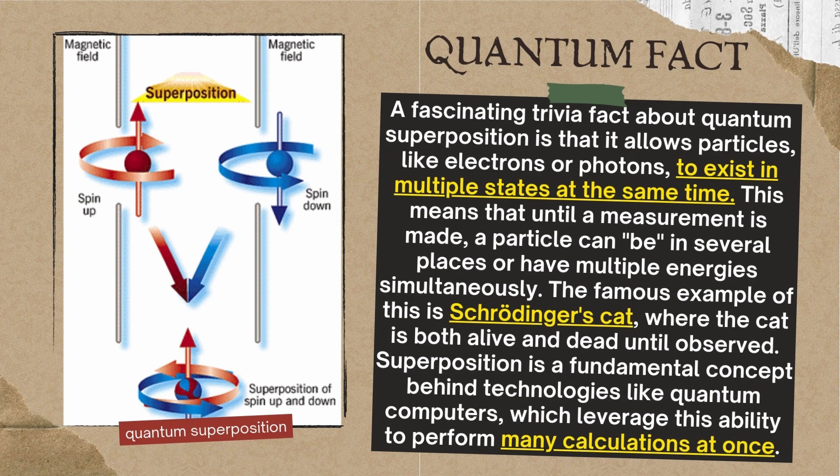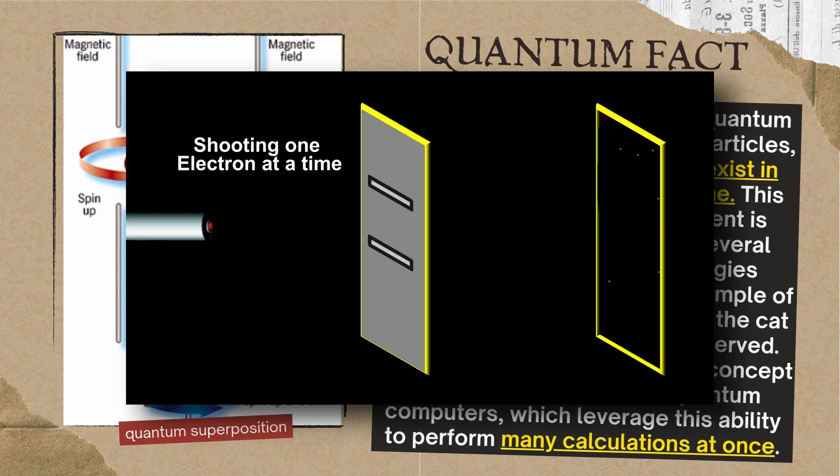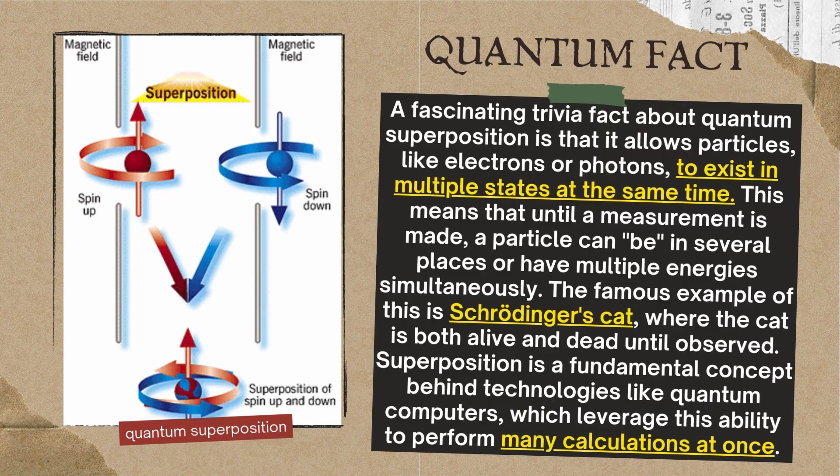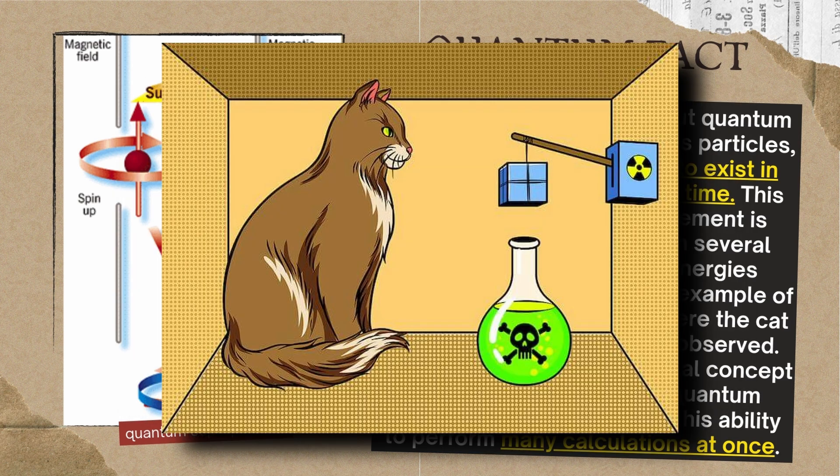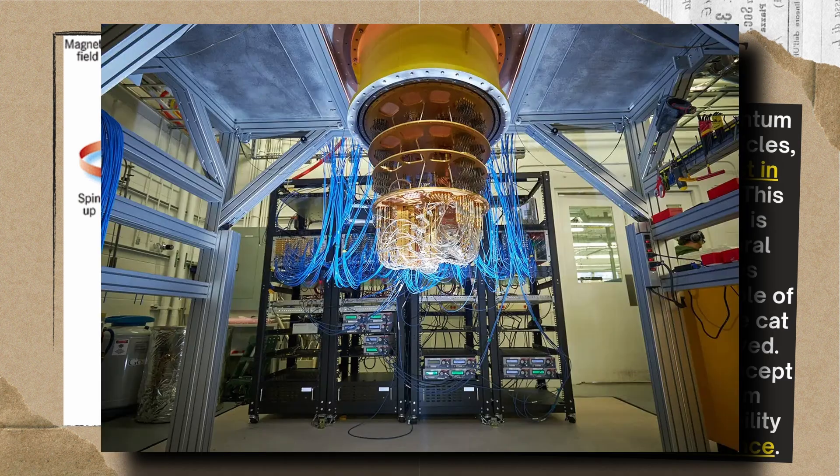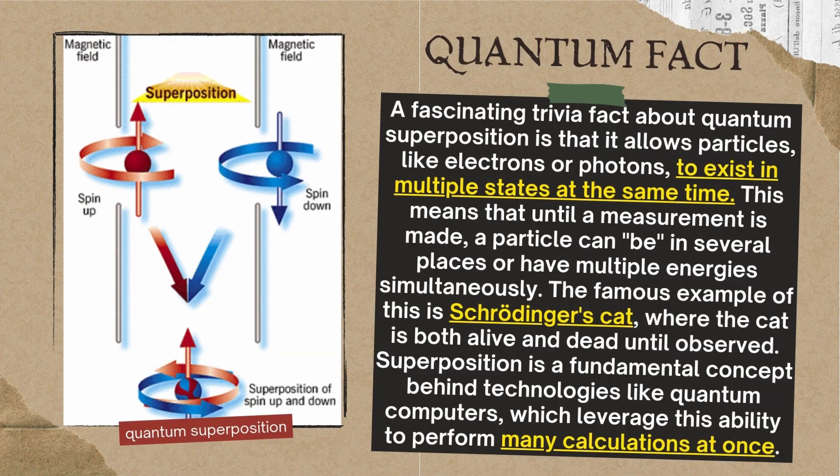A fascinating trivia fact about quantum superposition is that it allows particles, like electrons or photons, to exist in multiple states at the same time. This means that until a measurement is made, a particle can be in several places or have multiple energies simultaneously. The famous example of this is Schrödinger's cat, where the cat is both alive and dead until observed. Superposition is a fundamental concept behind technologies like quantum computers, which leverage this ability to perform many calculations at once.